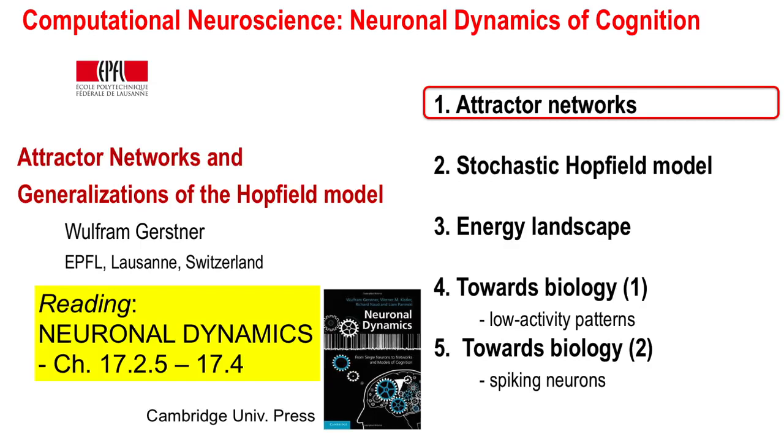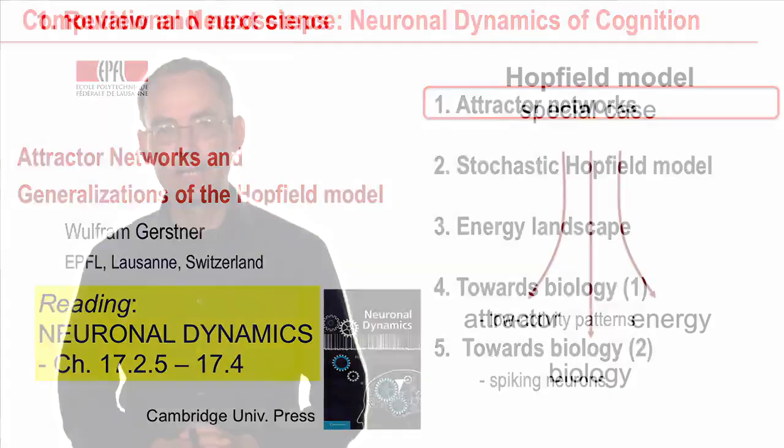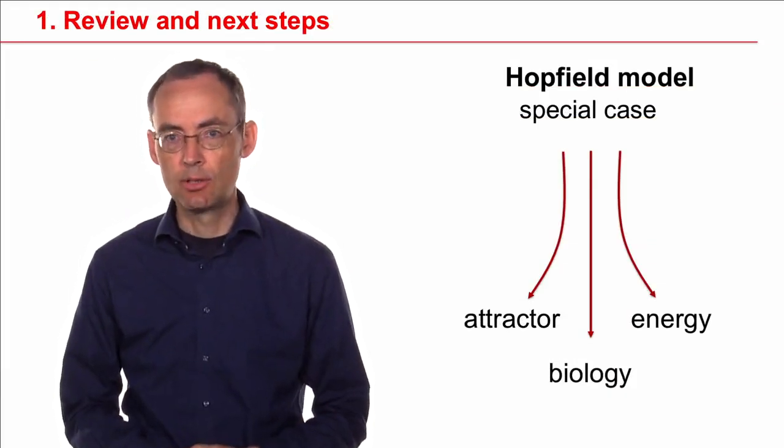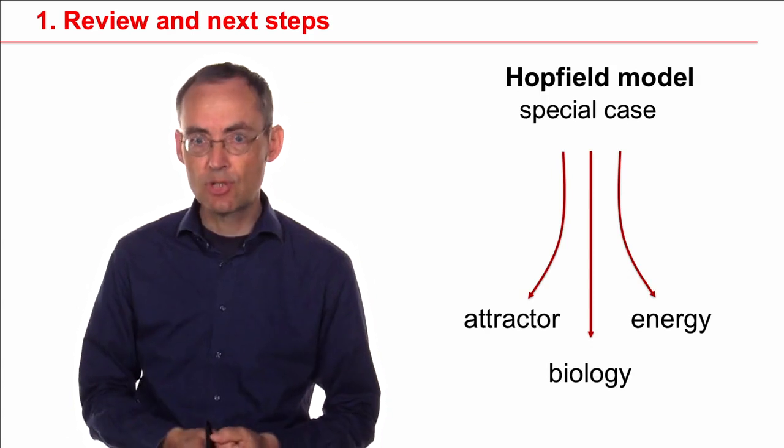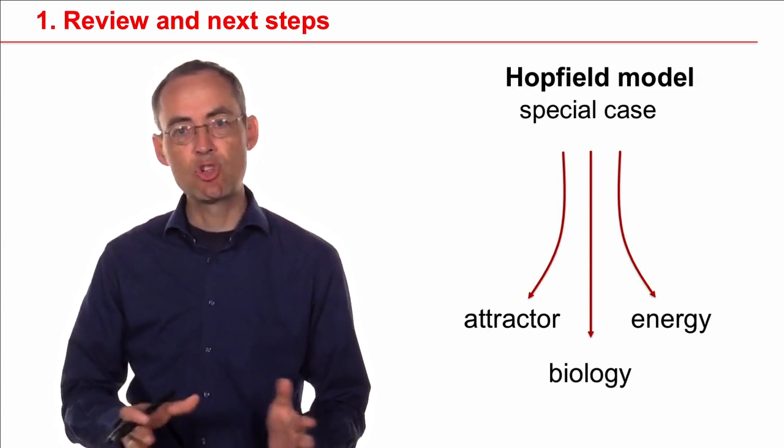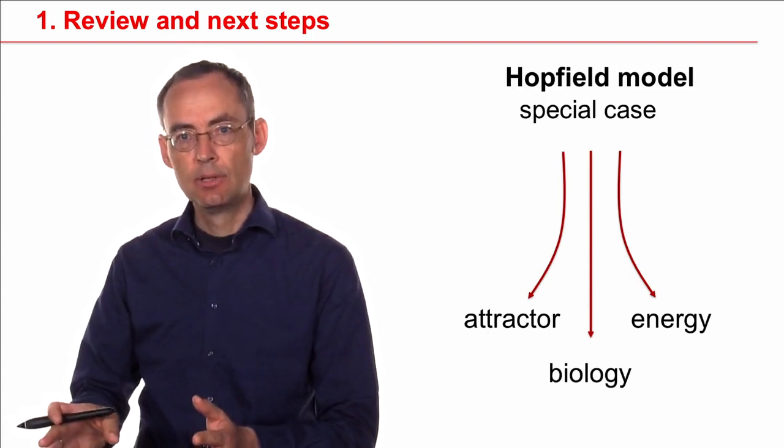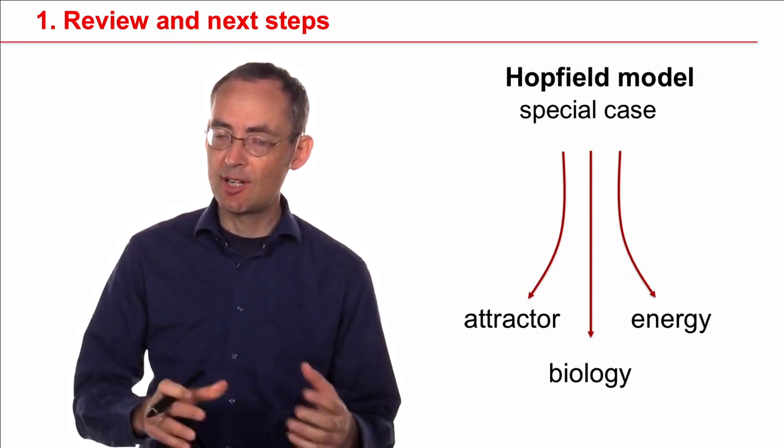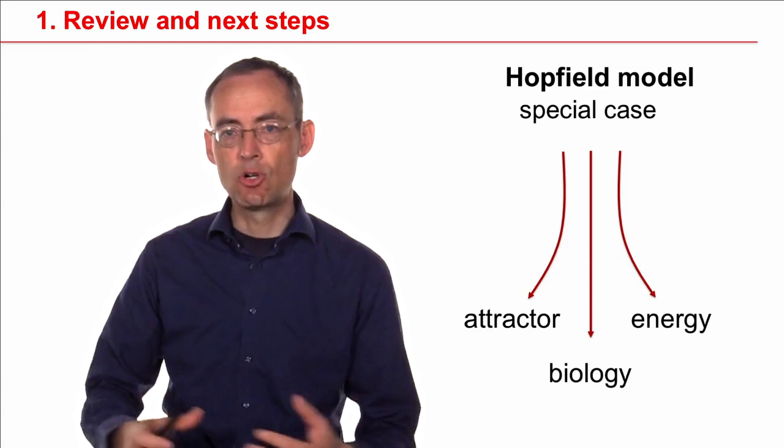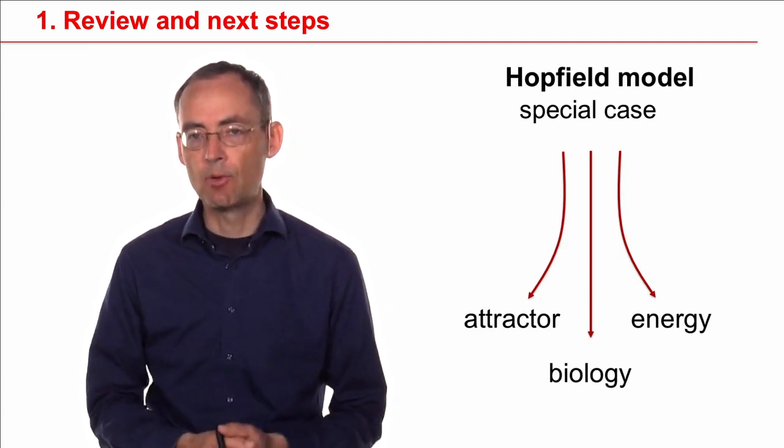Welcome to the class, Computational Neuroscience, Neuronal Dynamics of Cognition. Last week we looked at the Hopfield model. This week I will start from the Hopfield model and add several generalizations which should allow us to go towards biology. These generalizations can all be classified as attractor models, and of course I will explain what this means.